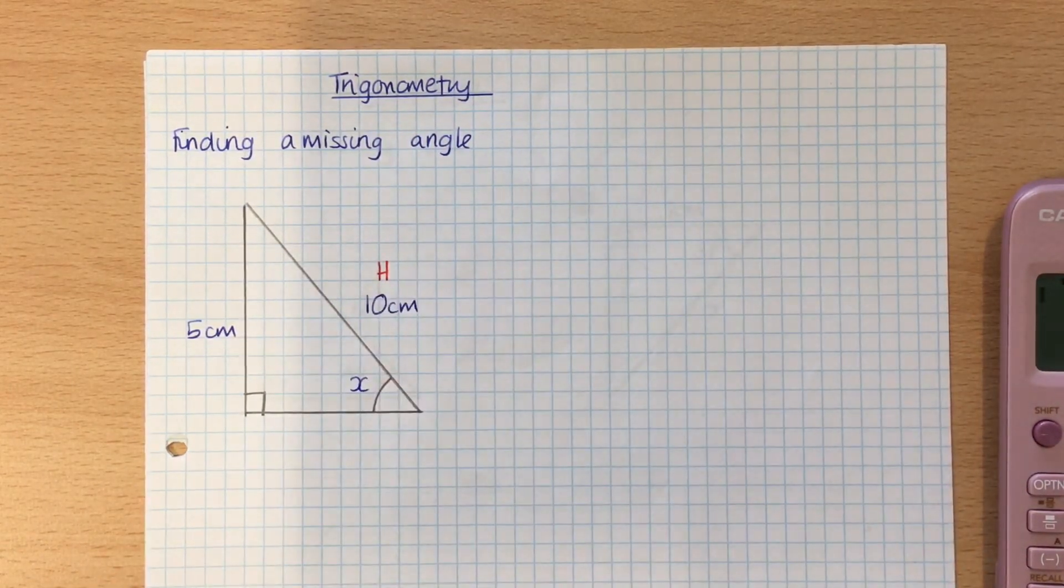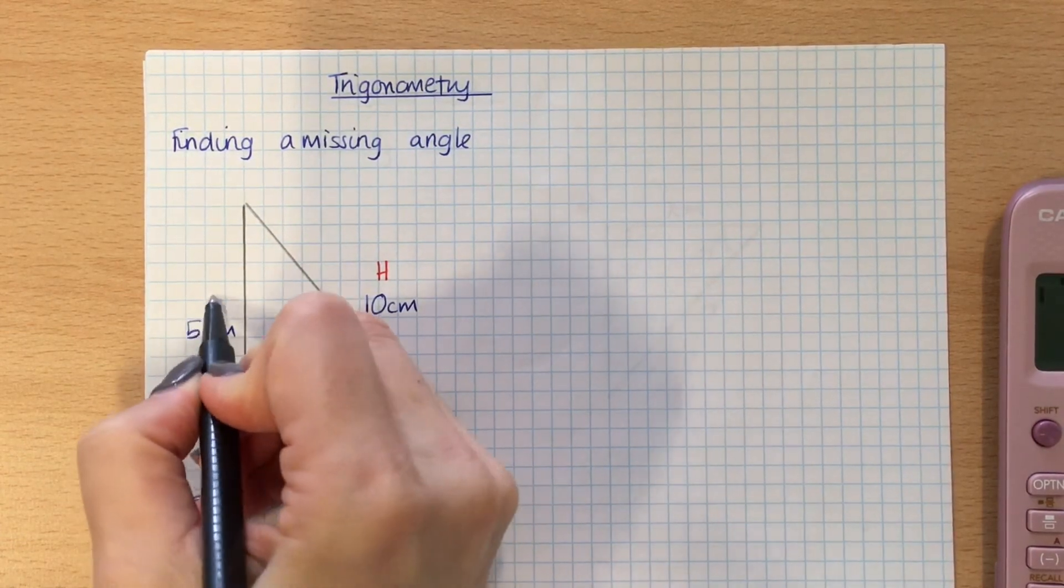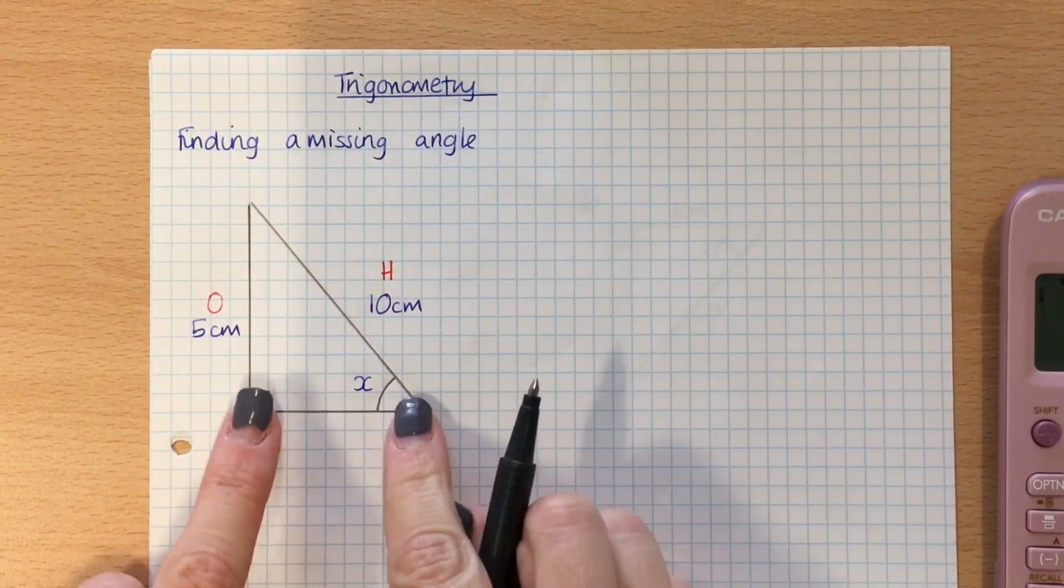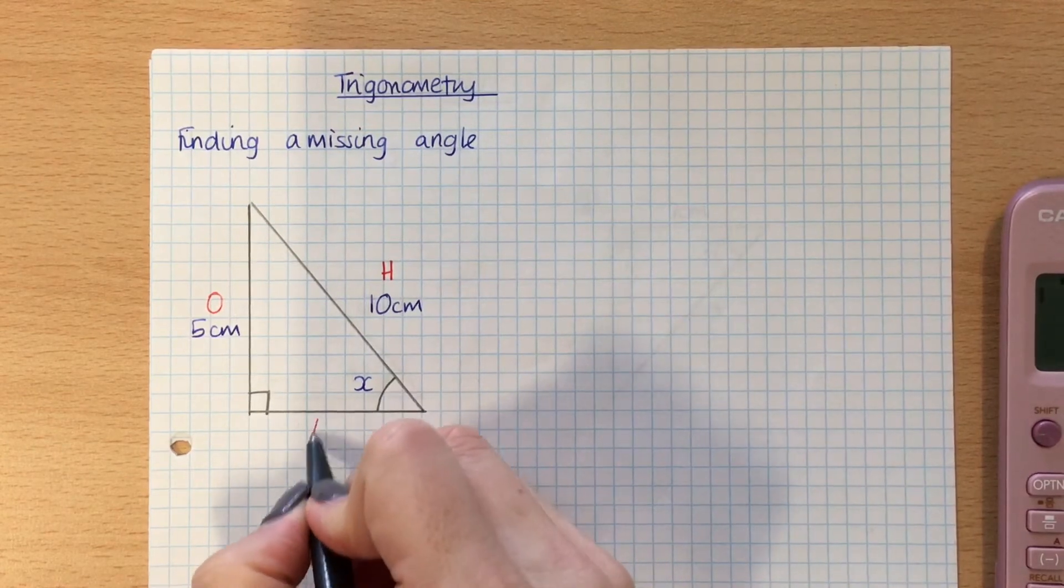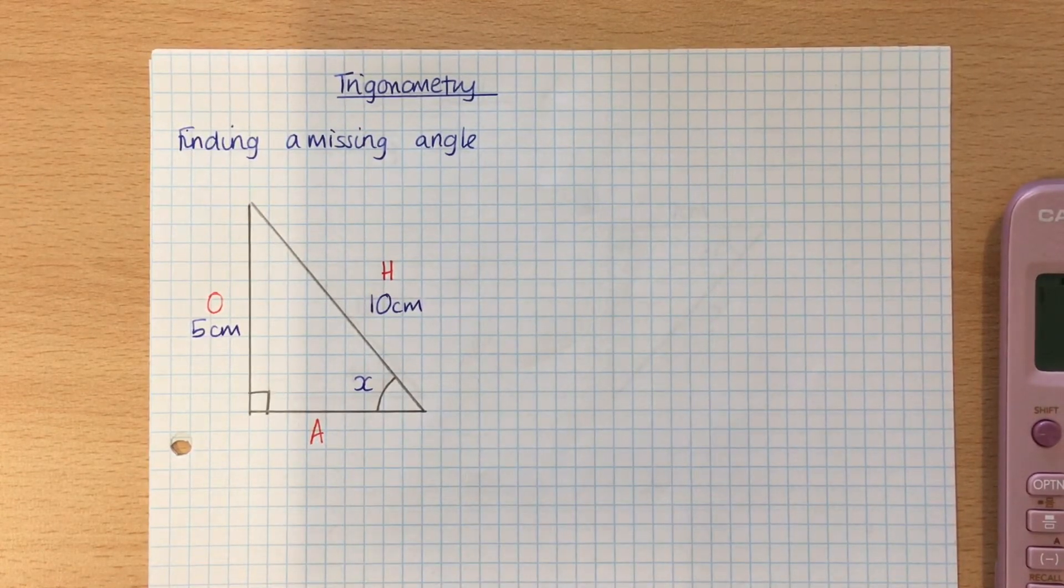The one opposite the angle is opposite, and the one trapped in between the angle and the right angle is adjacent. So I label that O, A, and H.